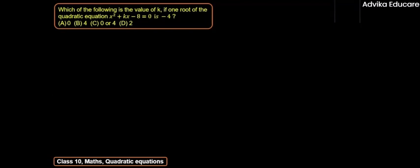Our problem states: which of the following is the value of k if one root of the quadratic equation x² + kx - 8 = 0 is -4?